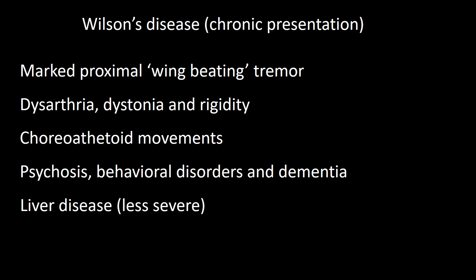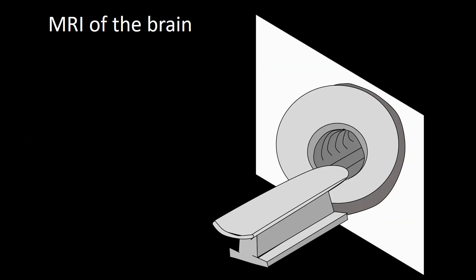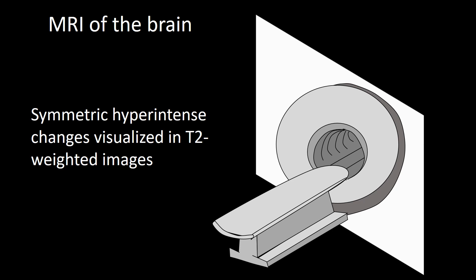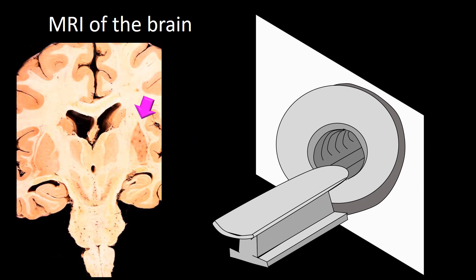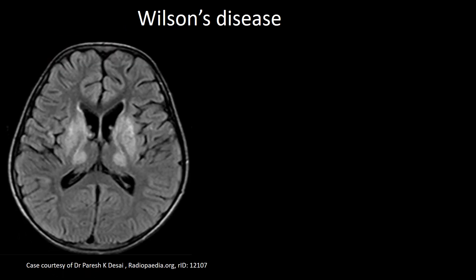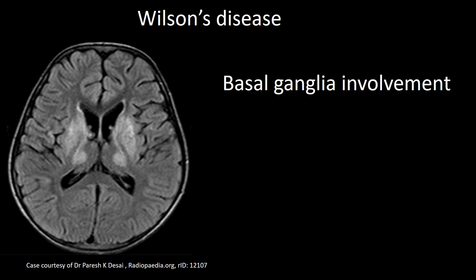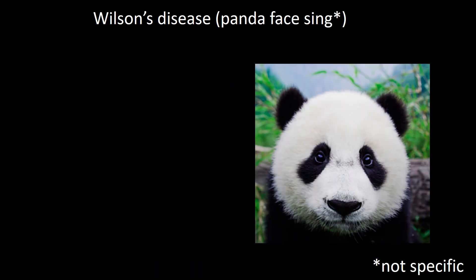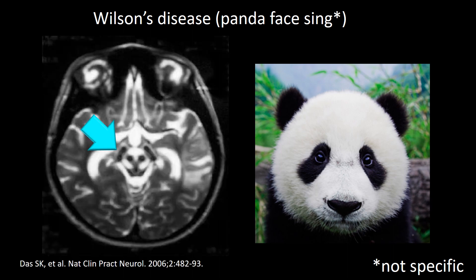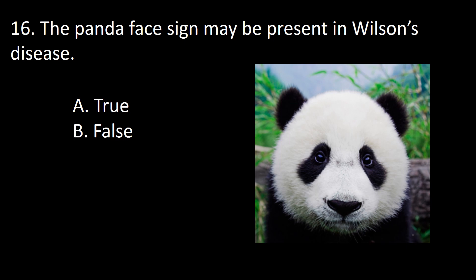The liver is also affected but less severely in the chronic presentation. Brain MRI shows symmetrical hyperintense changes best visualized on T2-weighted images, mainly affecting the putamen and caudate nuclei, but also the thalamus, midbrain, and pons. The most distinctive MRI finding is the panda sign, due to swelling of the white matter in the midbrain with relative sparing of the peduncles and the red nucleus. So the answer is true.